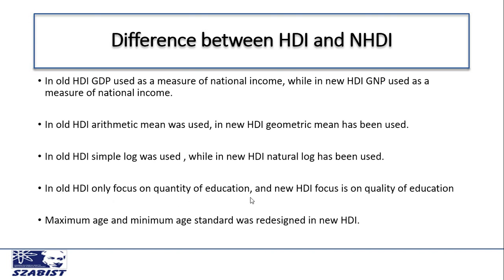The fourth major difference between the old HDI and new HDI is that old HDI only focuses on the quantity of education, but in new HDI the focus is on quality of education. They have changed actual attainment and gross enrollment, and have given different weightage to both of these indicators.